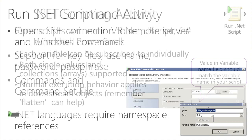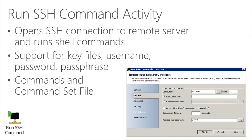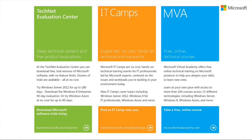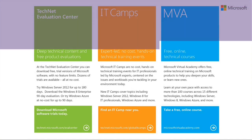Last but not least is the Run SSH Command activity. It opens an SSH connection to a remote server that you specify in the computer text box, and runs shell commands. It supports not only commands but also command set files. You can specify the port, a connection timeout in seconds, the character set, and also supports username and passwords, passphrases, and key files for authentication. This is another activity that's part of the foundational objects of Orchestrator 2012, which you can use to create complex workflows.